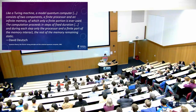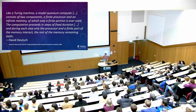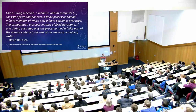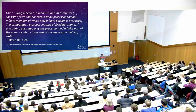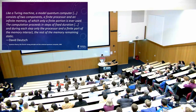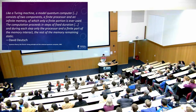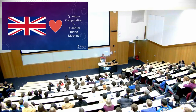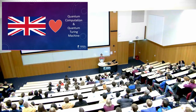Deutsch is at the University of Oxford. He did his work and published a paper back in the 80s, and following suit with Turing, he attempted to create a machine that simulated quantum mechanics to do quantum computations. This is a direct quote from his paper: 'Like a Turing machine, a model quantum computer consists of two components — a finite processor and an infinite memory of which only a finite portion is ever used. The computation proceeds in steps of fixed duration, and during each step only the processor and a finite part of memory interact.' To me, this reads like a machine that executes steps with a certain number of resources — a mechanical description of something.